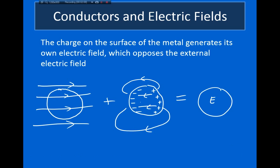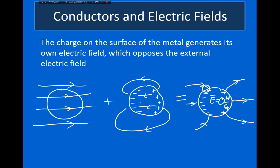So eventually what happens is the electric field inside the conductor will go to zero. We'll have an electric field which comes in and just touches the metal, but inside the metal itself the electric field is going to be zero. We'll have this negatively charged surface on one side and a positively charged surface on the other. The electric field lines are actually ending on the negative charge, and over here the electric field lines are emanating from the positive charge. But inside the metal itself, the electric field is zero.